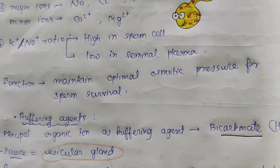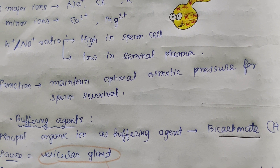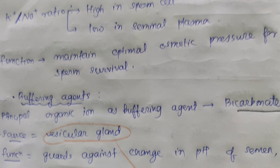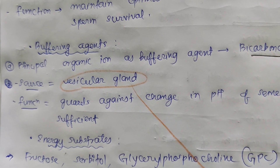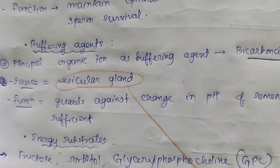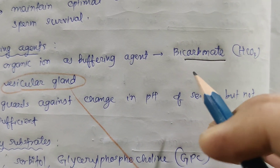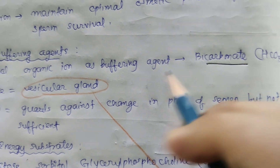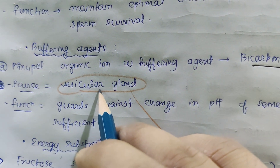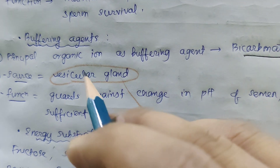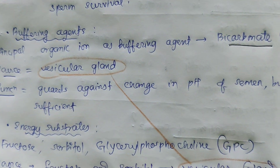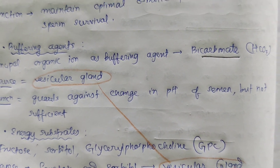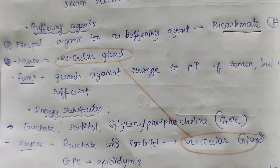The next composition is buffering agents. The principal organic ion acting as a buffering agent is the bicarbonate ion, which is secreted by the vesicular gland. Its function is to maintain pH and guard against acidic changes in the pH of semen, though it is not fully sufficient on its own.